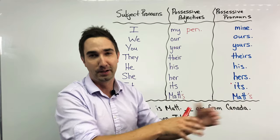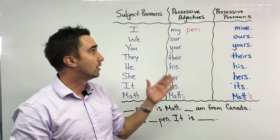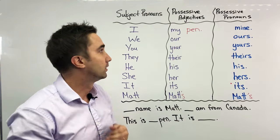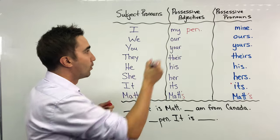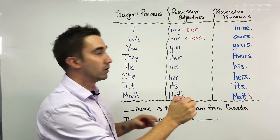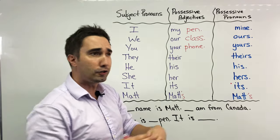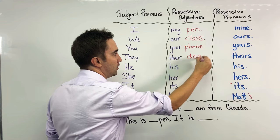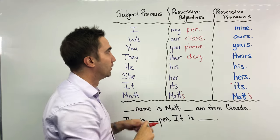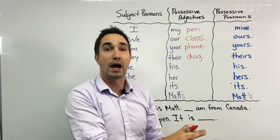It is my red pen — two adjectives there. So anytime we use a possessive adjective, we have to use a noun, something that is mine. So my pen, our class. Maybe now you're looking at your phone or your computer. We can say their dog — their dog is cute. Their dog, my dog, our dog. Anything possessive adjective plus a noun.